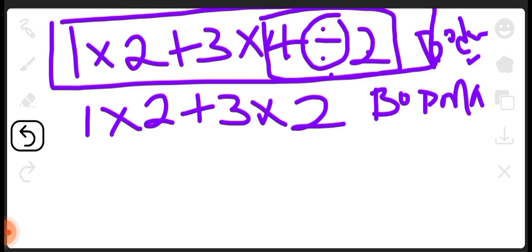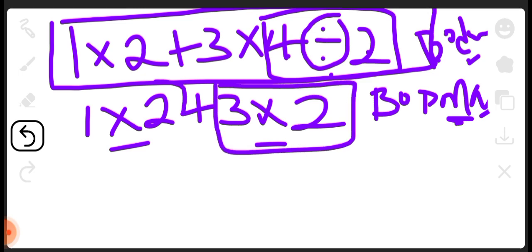From the same BODMAS, after division, the next one is M which is multiplication. So once we have multiplication, which is this and this, then you solve them out.